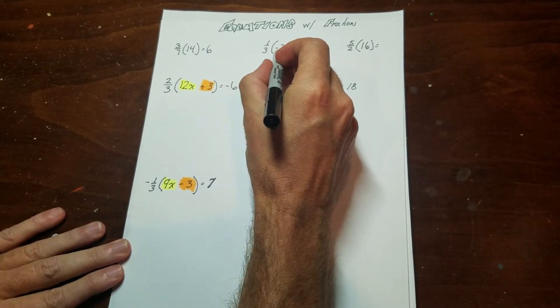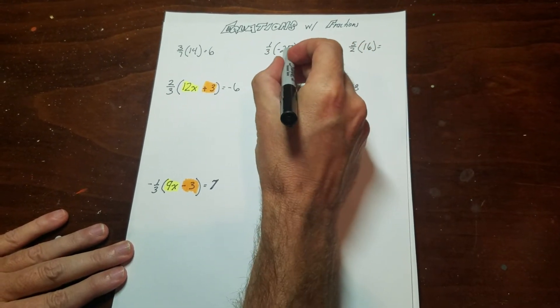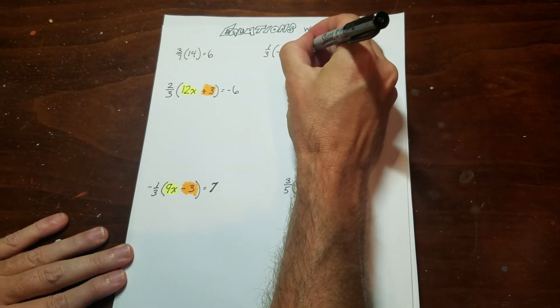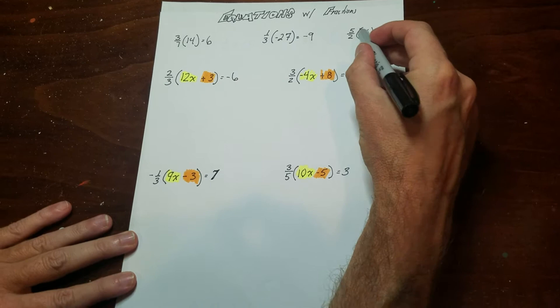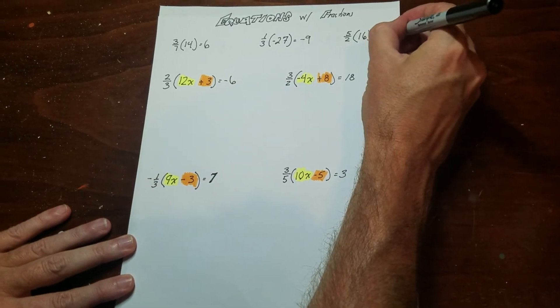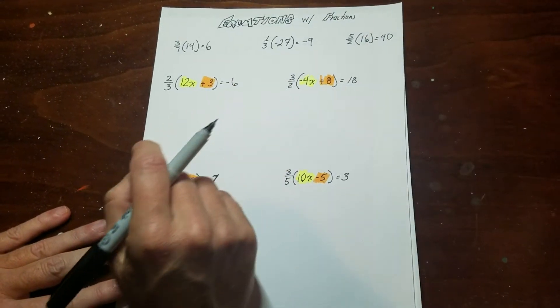They're quite simple. 3 goes into negative 27, negative 9 times. Negative 9 times 1 is negative 9. And then 2 into 16 is 8, and 8 times 5 is 40. So when you multiply a whole number by a fraction, that's pretty much how it works.